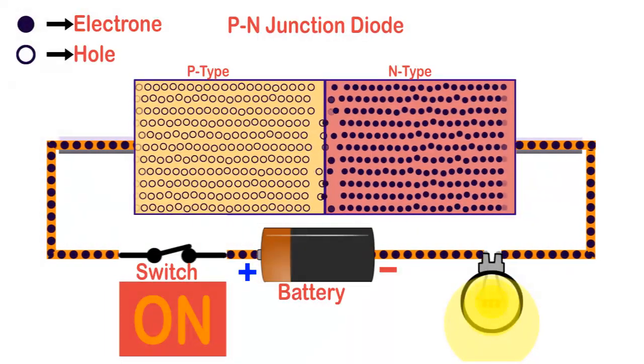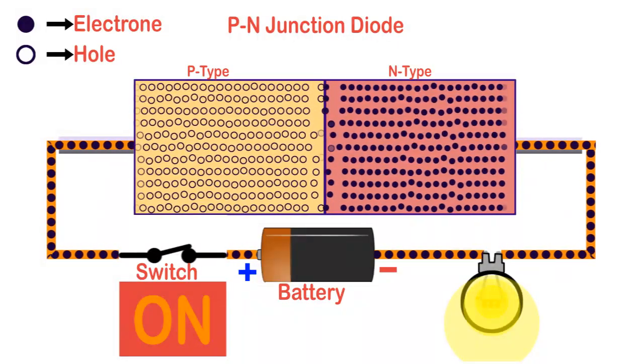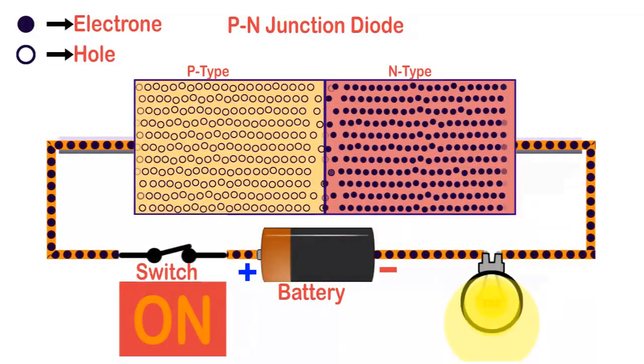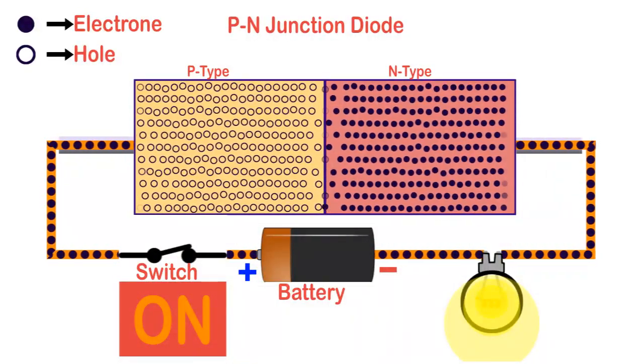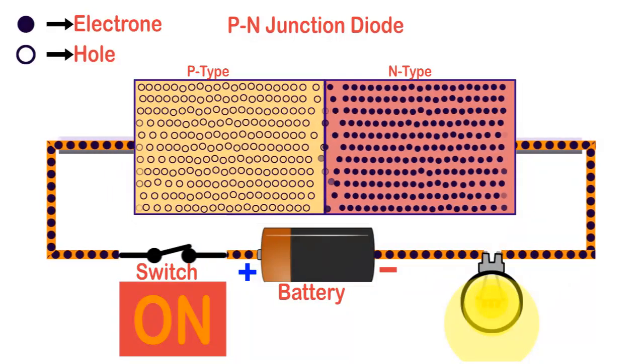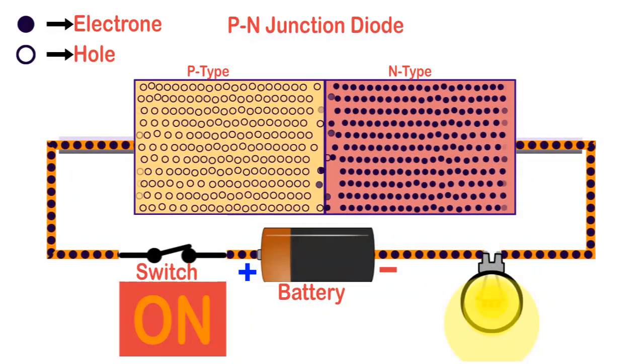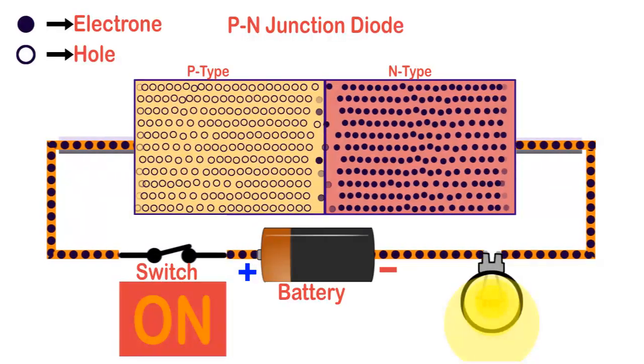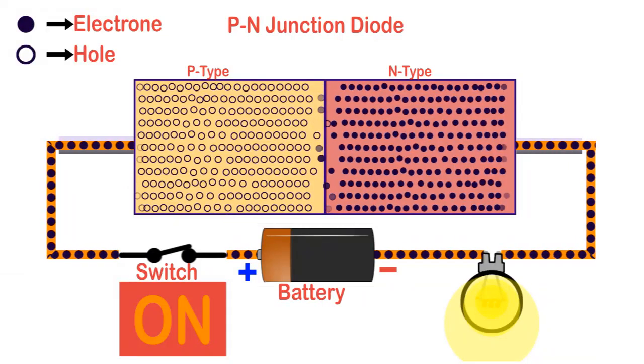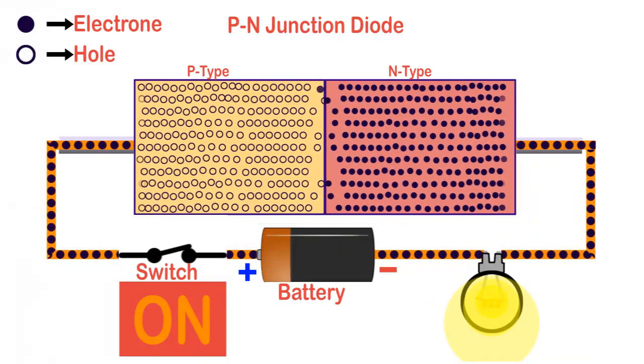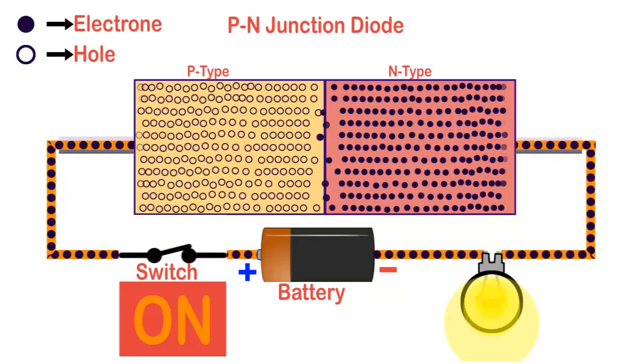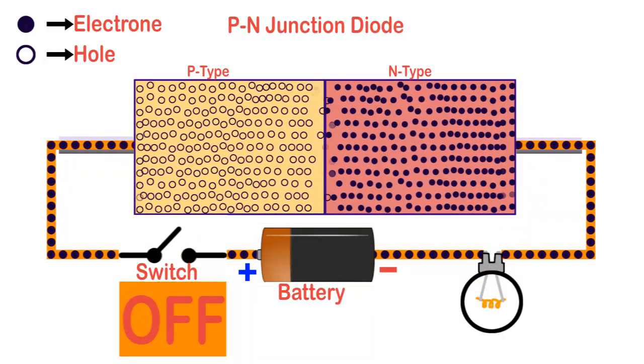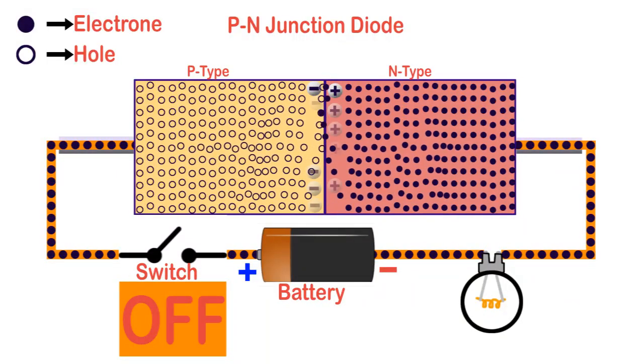As there is no opposition offered to this current, the forward resistance of the diode is very small, typically in the order of 10 to 100 ohms. Due to this small forward resistance, there is a small drop in potential from one end to another, known as forward voltage drop, which is equal to 0.7 volts for silicon diodes and 0.3 volts for germanium diodes.